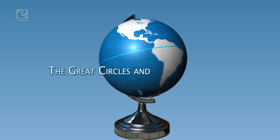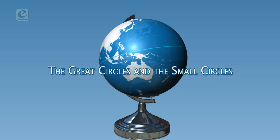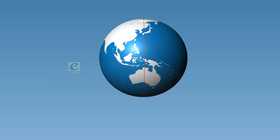The Great Circles and the Small Circles. A circle dividing the globe or the earth into two equal parts is called a great circle.